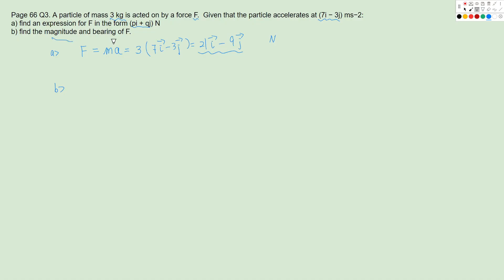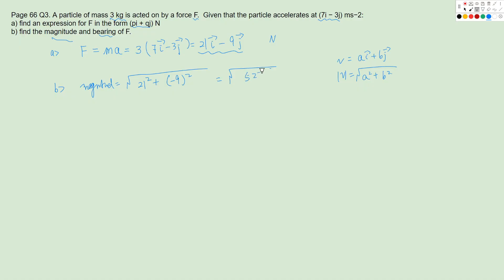Question B asks for the magnitude and bearing of the force. For the magnitude: for any vector Ai + Bj, its magnitude equals the square root of A² + B². So here, the magnitude equals the square root of 21² + (−9)², which is the square root of 522.